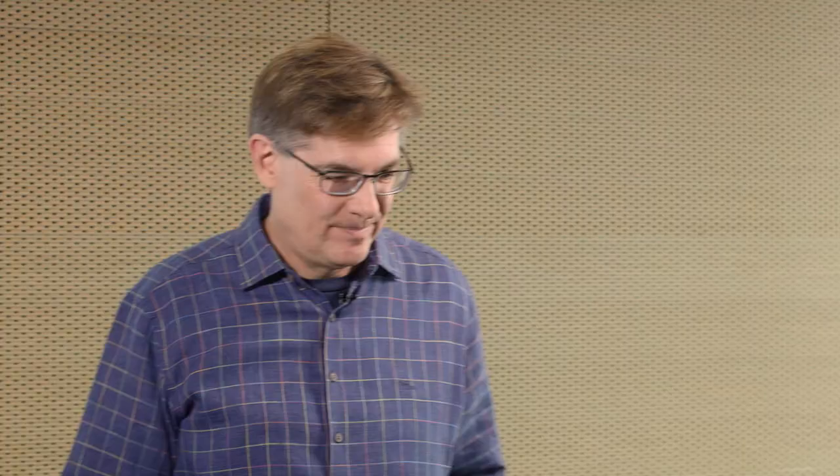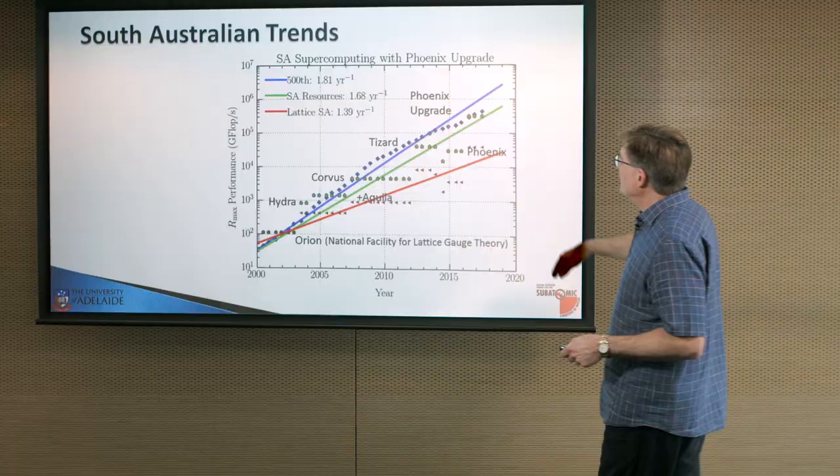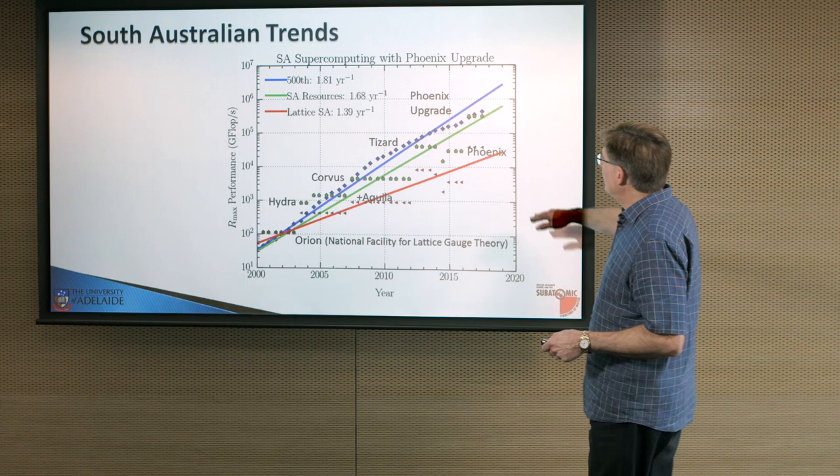How much of that has been allocated to Lattice QCD? That trend line is very much below where it needs to be. I'm happy to say that we're on the high side of the curve, but it's a problem.